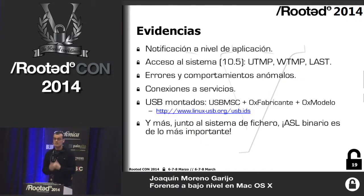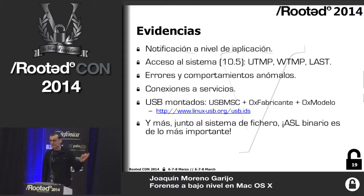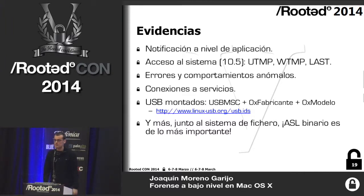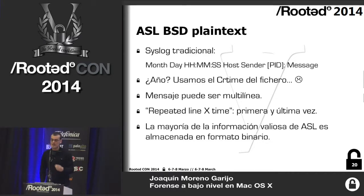Evidence from applications is also very important. UTMP and WTMP in binary format are like ASL — we won't find those on Macintosh. We also have error logs, connection logs, USB mounted devices including manufacturer and model — exactly the same as Linux. I look for a USB MSC entry in ASL, and that gives me all the USB devices that have been mounted. ASL, BSD, binary.